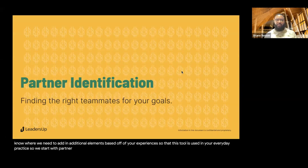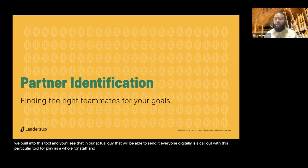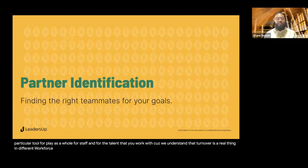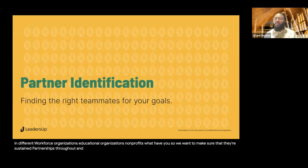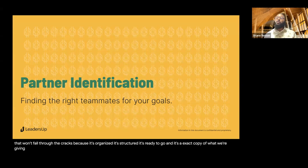We start with partner identification — finding the right teammates for your goals. One of the things we built into this tool, which you'll see in our actual guide that we'll send everyone digitally, is a call-out for staff and for the talent you work with. Because we understand that turnover is a real thing in workforce organizations, educational organizations, and nonprofits. So we want to make sure there are sustained partnerships throughout, and we're building these zero-gravity batons — something you can pass to someone that won't fall through the cracks because it's organized, it's structured, it's ready to go.